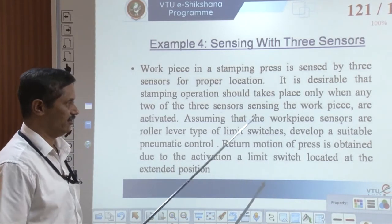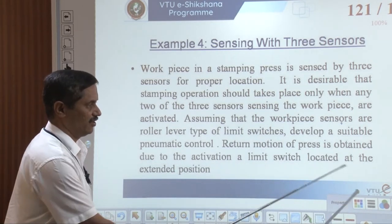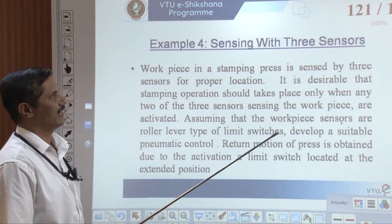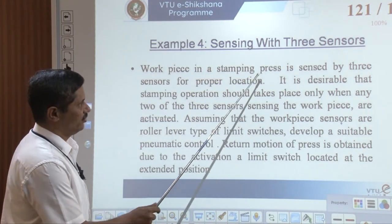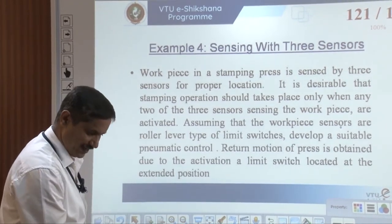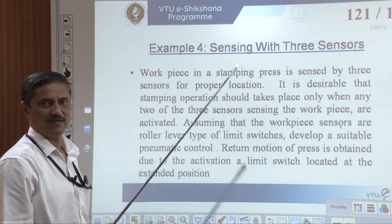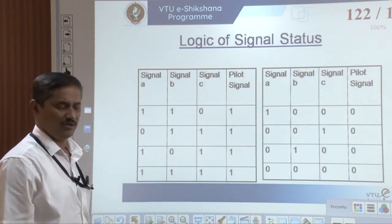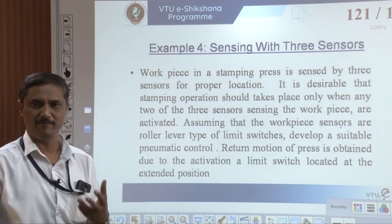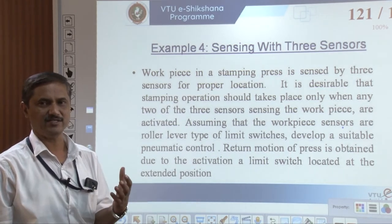Develop a suitable pneumatic control. Return motion of the press is obtained by activating the limit switch at the extended position — automatically when it extends it has to actuate. Stamping only proceeds when the sensors indicate leveling — when two of the sensors give you the signal. In such cases, what is important? You can draw a truth table. Logically, you identify in which cases you get an output. There are three sensors here.